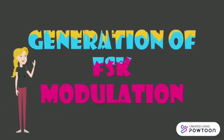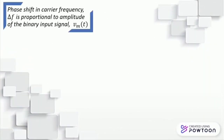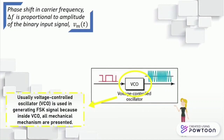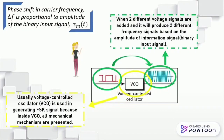Next, we are going to discuss about the generation of FSK signal. Phase shift in carrier frequency is proportional to the amplitude of the binary input signal, which is also known as the information signal. A VCO, or voltage controlled oscillator, is usually used in generating FSK signals because inside the VCO all mechanical mechanisms are presented. Therefore, when two different voltage signals are added together, it can produce two different frequency signals with the help of VCO, based on the amplitude of the information signal.